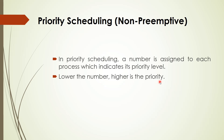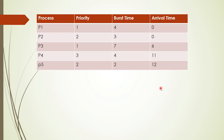So if there are two processes P1 and P2, P1 is having priority 1 and P2 is having priority 2. As P1 is having a value lower than P2, P1 is having the higher priority. So let us look at an example. Here there are five processes, and the burst time and arrival time is given for all five processes, in addition to the priority.